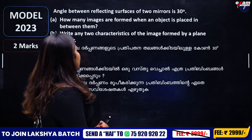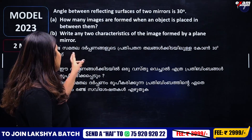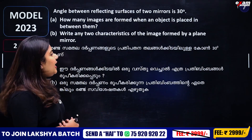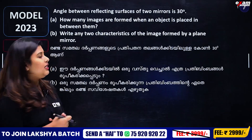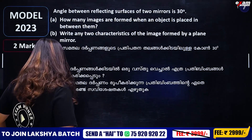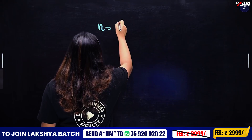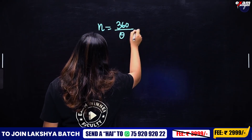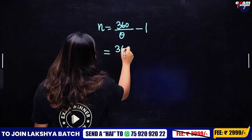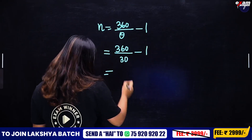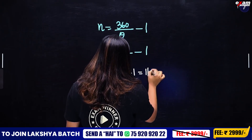The angle between the reflecting surfaces of two mirrors is 30 degrees. How many images are formed when an object is placed between them? For two plane mirrors at an angle, the number of images is 360 divided by theta minus 1. So 360 divided by 30 minus 1 equals 12 minus 1, that is 11 images.